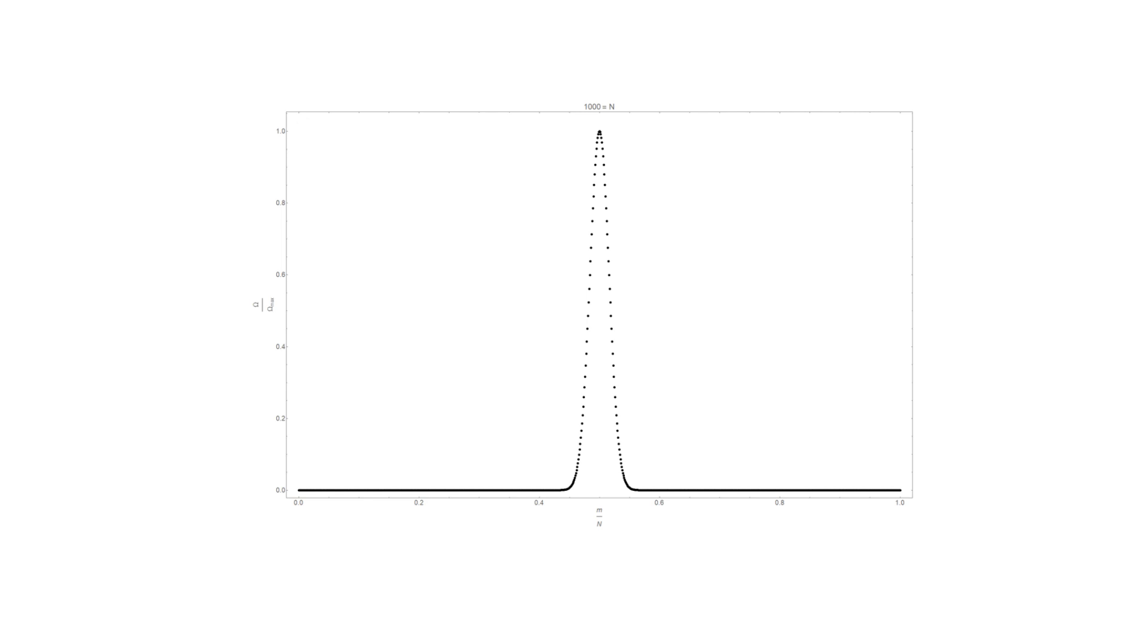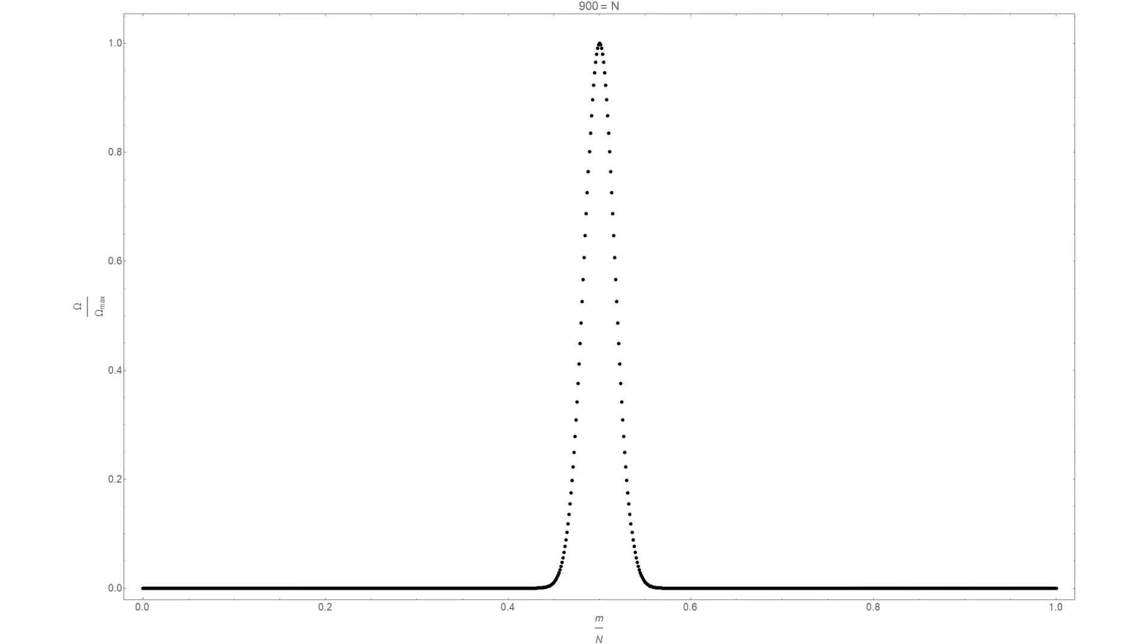What we see is that there's a sharp peak around m equals n over 2, which is our highest entropy state. We can also notice that as n gets larger, this peak gets sharper and sharper, meaning that our higher entropy states are more localized around this n over 2 state.